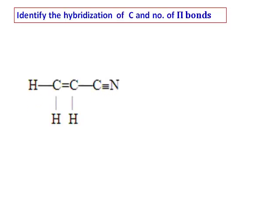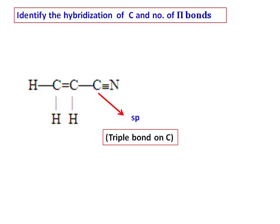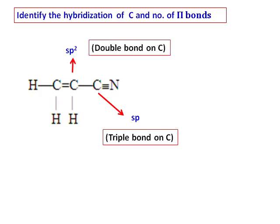Next, identify the hybridization of each carbon and the number of pi bonds. The first carbon has a carbon-nitrogen triple bond, so it is sp hybridized. The next carbon has a double bond, giving sp2 hybridization. The carbon adjacent to it also has a double bond and is similarly sp2 hybridized.